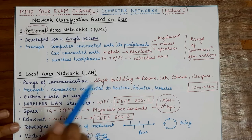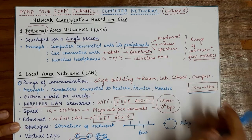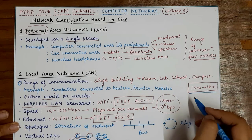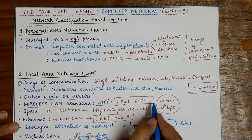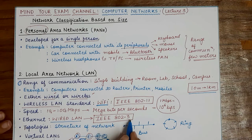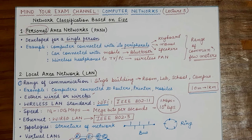To summarize: the most important point when describing a Local Area Network is the range of communication — 10 meters to 1 kilometer. Beyond one kilometer, a network becomes a Metropolitan Area Network. Remember the two standards: Wi-Fi (wireless LAN) is IEEE 802.11, and Ethernet (wired LAN) is IEEE 802.3. In the next video we will study Metropolitan Area Networks and Wide Area Networks. Thank you for watching!